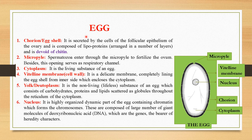Most insects are oviparous in nature, so it is important to know about the structure and components of the insect egg. Here you can see a structure of a typical insect egg. From the outer side, you can see a hardened egg shell also known as chorion. This chorion is secreted by cells of the follicular epithelium of the ovary and is composed of lipoproteins. Chitin is absent in the insect egg shell. Whenever you attempt a competitive exam on entomology, there will compulsorily be a question on the insect egg shell composition — the answer is protein.